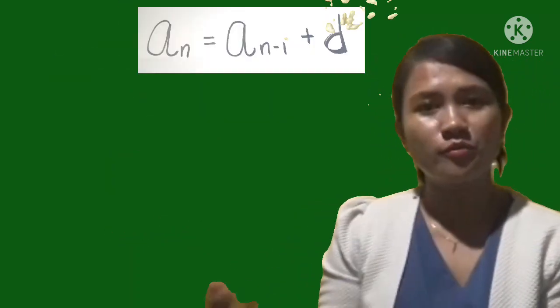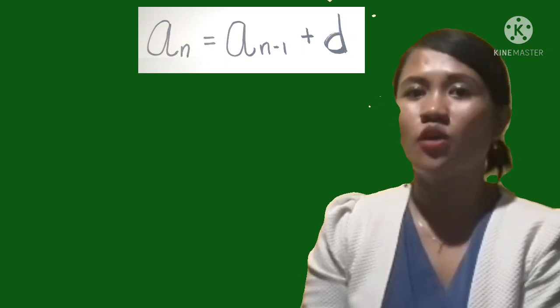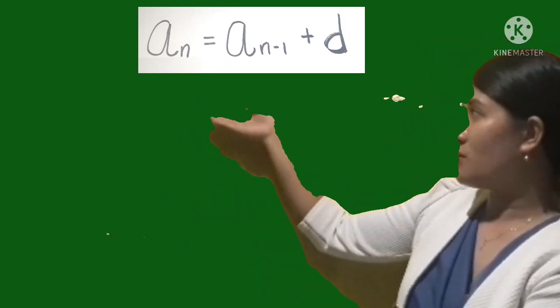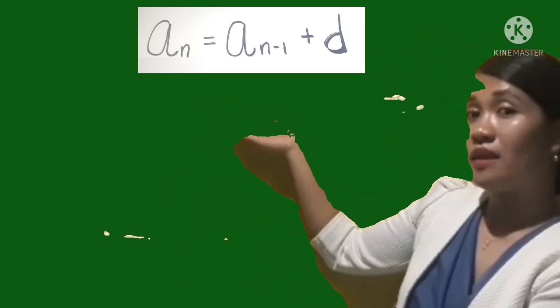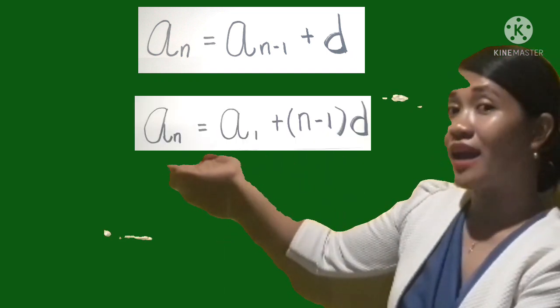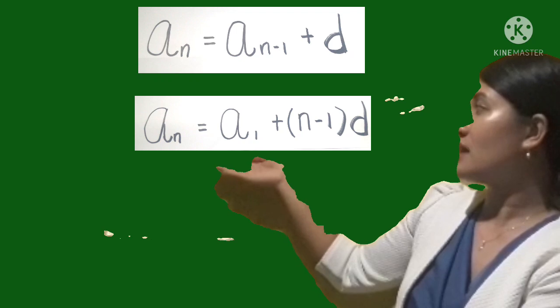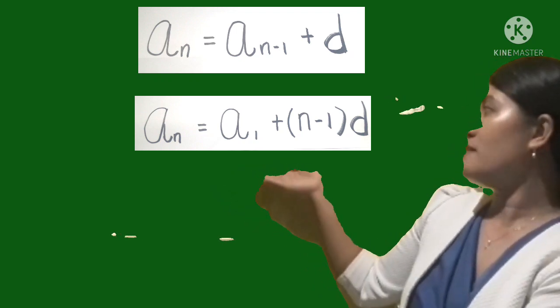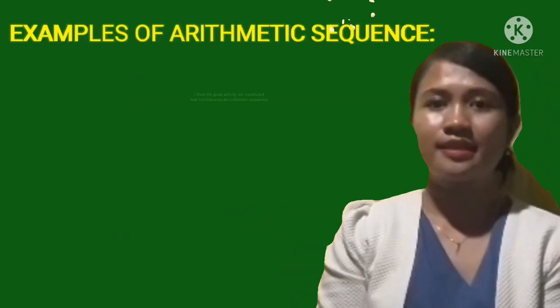So in general, the formula of arithmetic progression, we have A sub n is equal to A sub n minus 1 plus d. And A sub n is equal to A sub 1 plus n minus 1 times d.